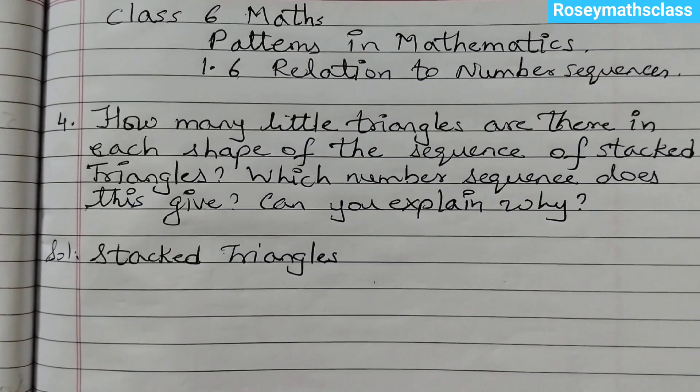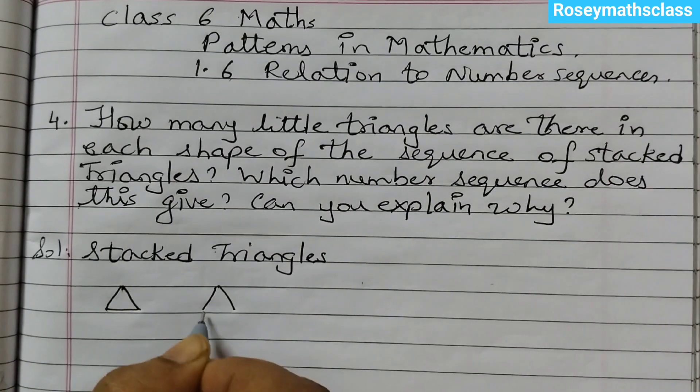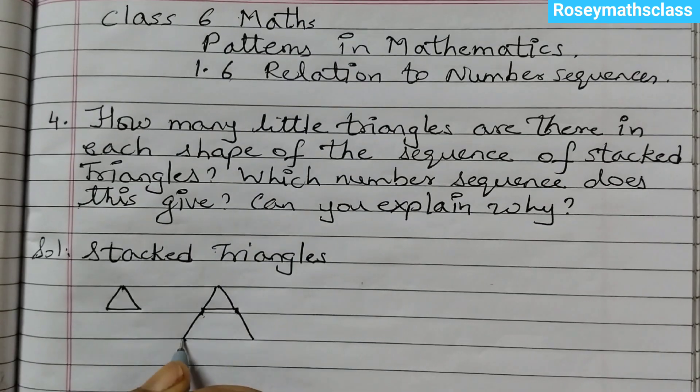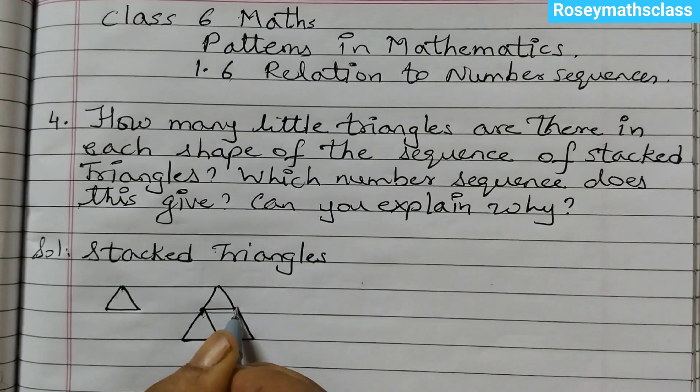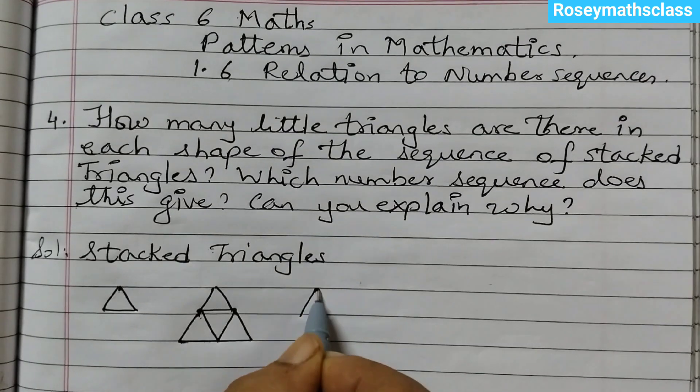First let's draw it. First we will have just one triangle like this. Then you will add one more row to this and we will add the triangles like this. So now 1, 2, 3 - three triangles here.